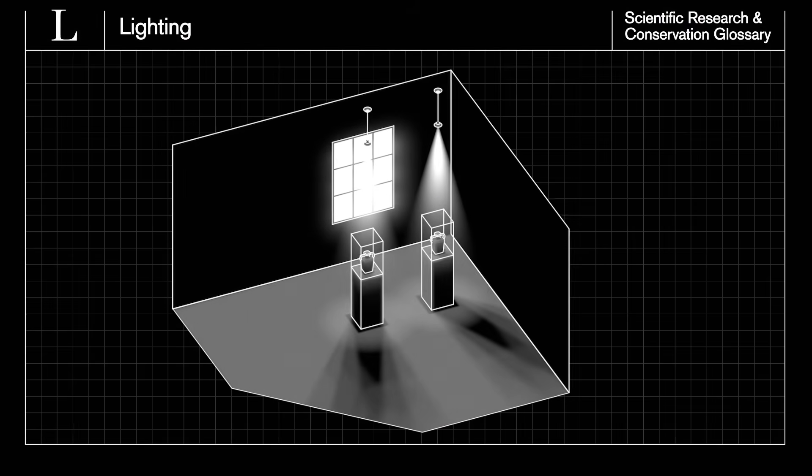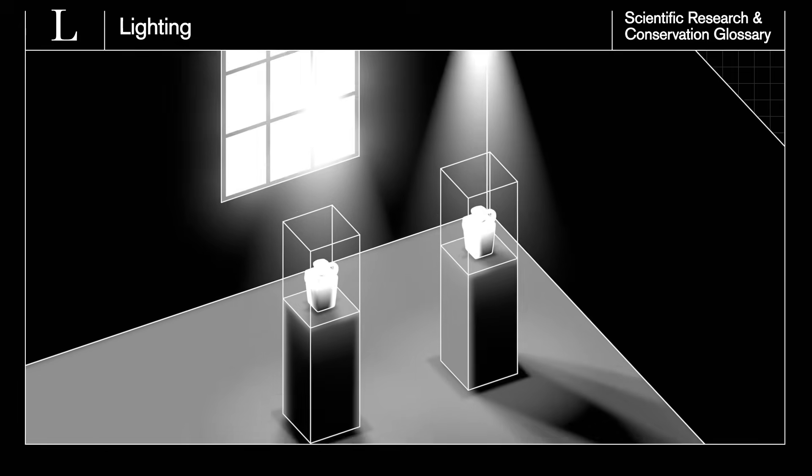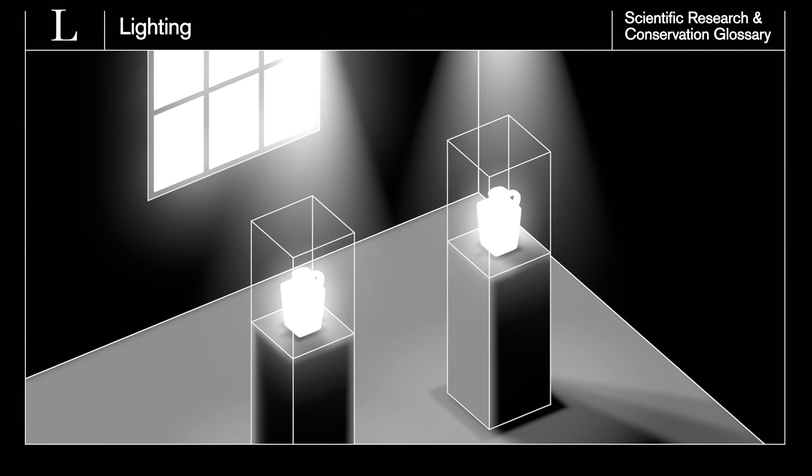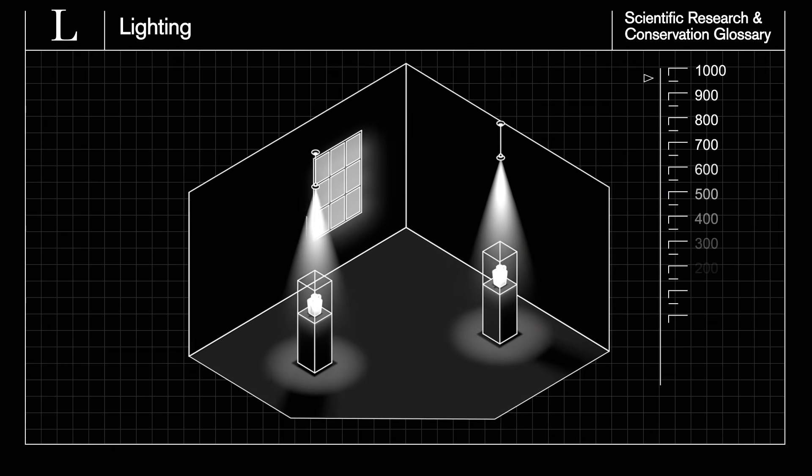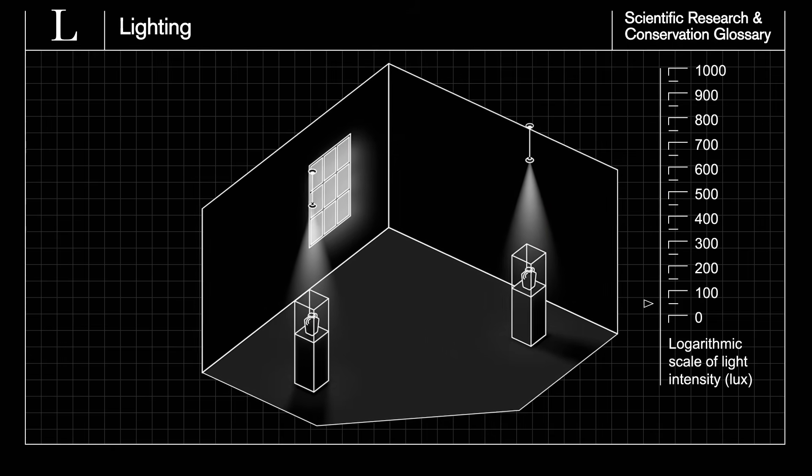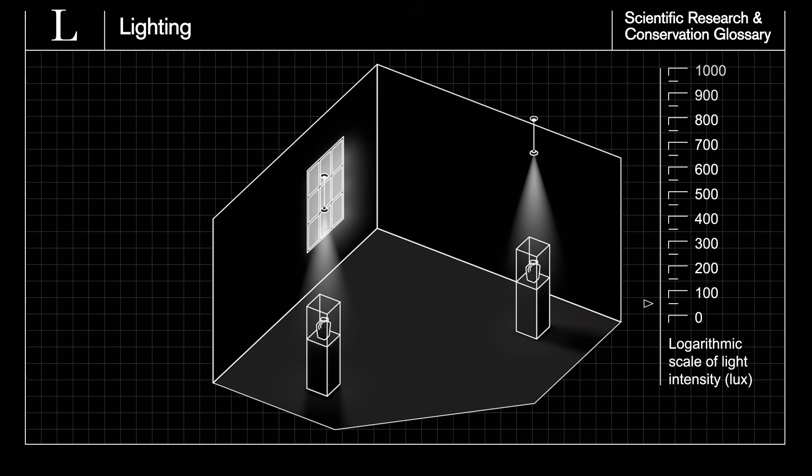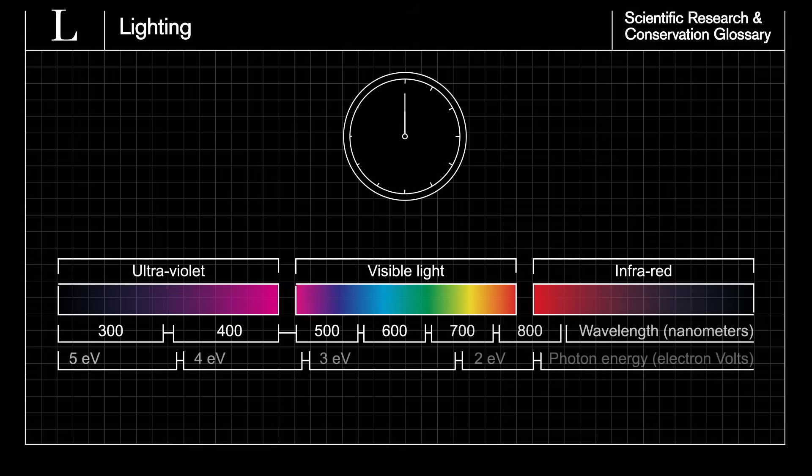The lighting used in museums, if not controlled, can bleach or fade and embrittle objects. Conservators, curators and designers work together to ensure a balance between visibility and protecting the objects from harsh lighting. Scientists can also test how long an object can be displayed under certain lighting conditions.